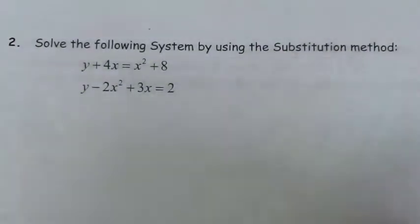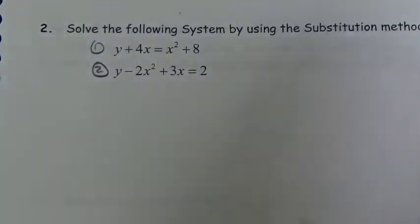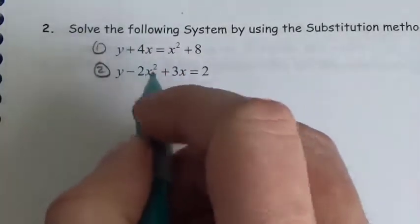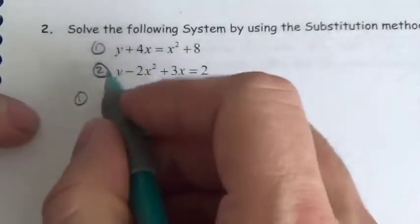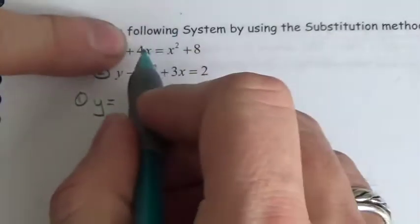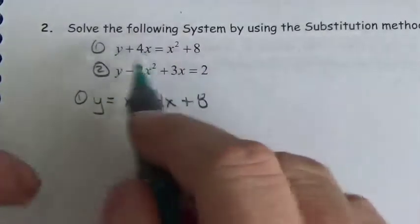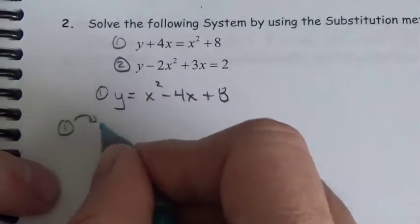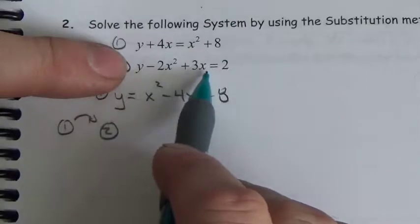Solve the following system by using the substitution method. We're going to do this algebraically. Here's equation 1, here's equation 2. By doing the substitution method, I'm going to isolate one of the variables first. I'll take equation 1 — because all I've got to do is move one term over to get y isolated. So equation 1 becomes y equals x squared minus 4x plus 8. Now I'm going to substitute that into equation 2. Equation 2 is y minus 2x squared plus 3x equals 2.